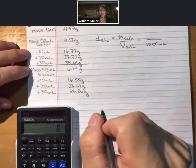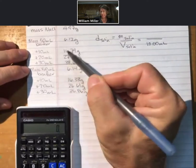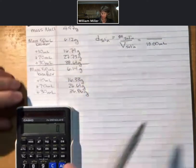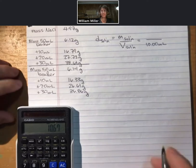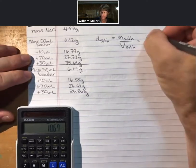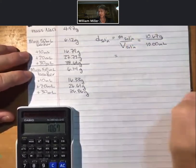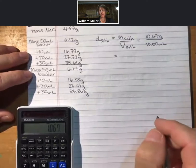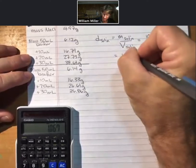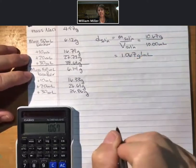To find the mass of our solution each time we add 10 milliliters, take that number and subtract off the previous number. I get 10.67 grams, and my density is 1.067 grams per milliliter.